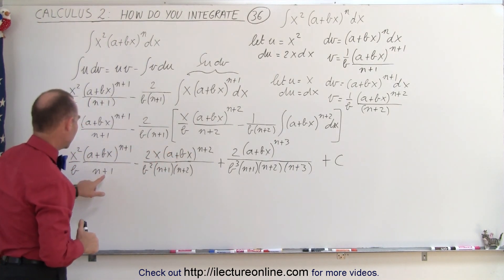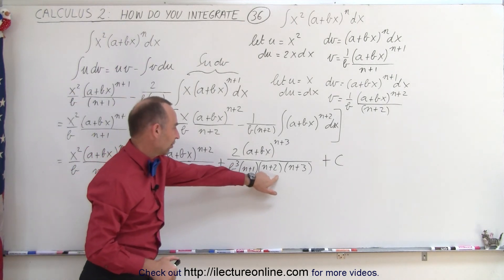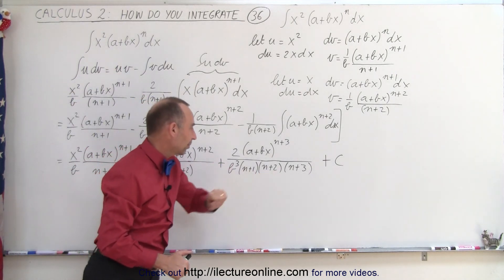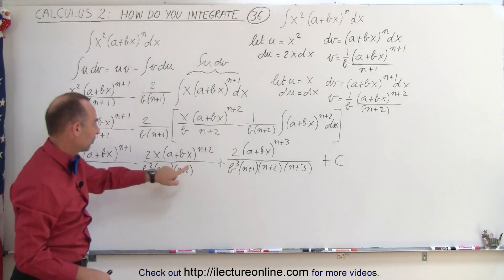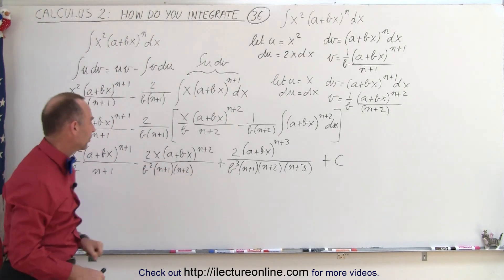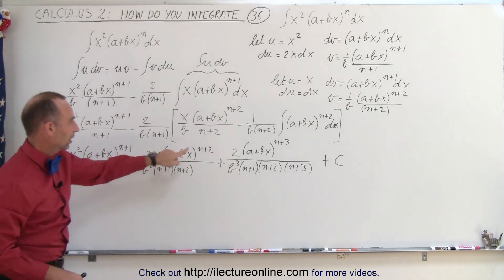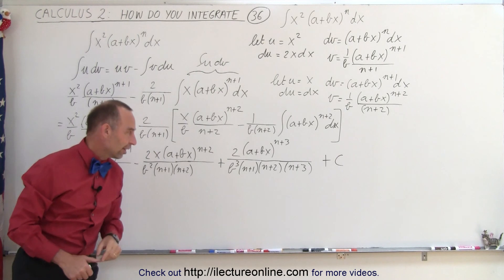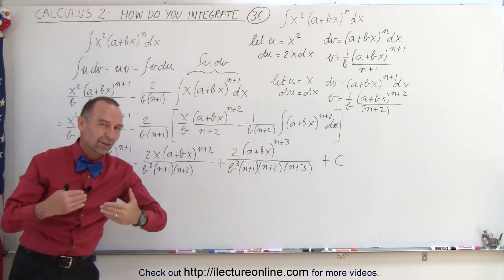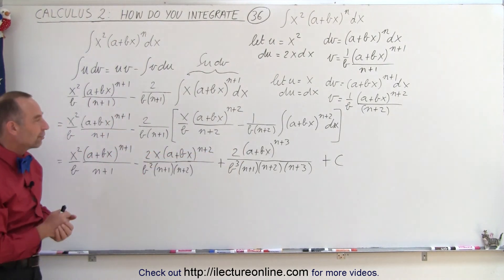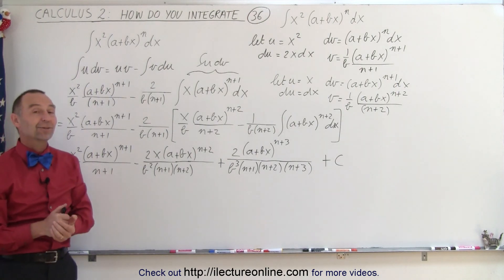Notice we have n plus 1, n plus 1 times n plus 2, and n plus 1 times n plus 2 times n plus 3 in the denominators. We have b to the first power, b squared, and b cubed. And we have x squared, x, and no x at all — with the exponent increasing each time. You can see the general trend of what that solution looks like, and that's how it's done.